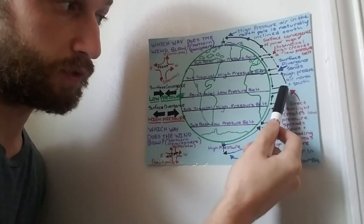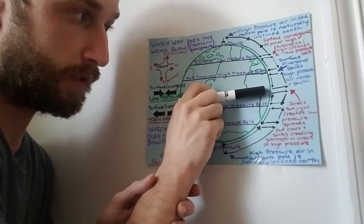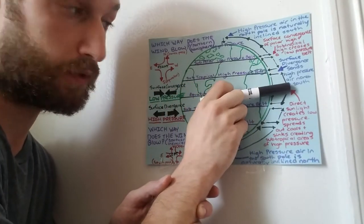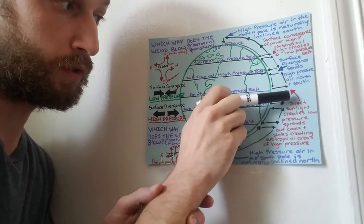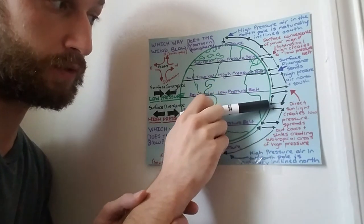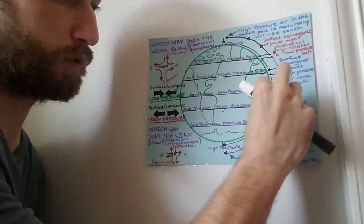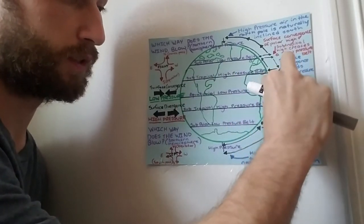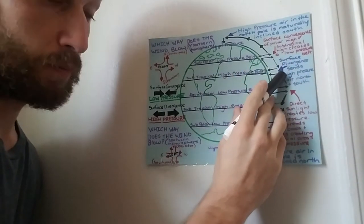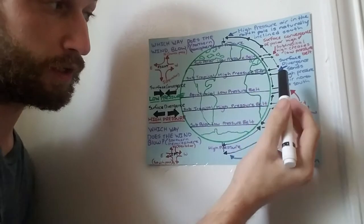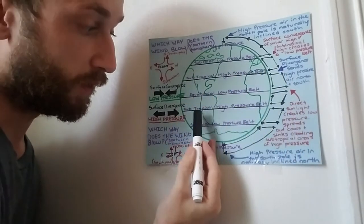Right at the equator, that air rises because of convection, spreads out in the tropopause, cools, sinks, and then starts the process over again in a cyclical motion. These regions where the air sinks create belts of high pressure in what we would call the tropics.